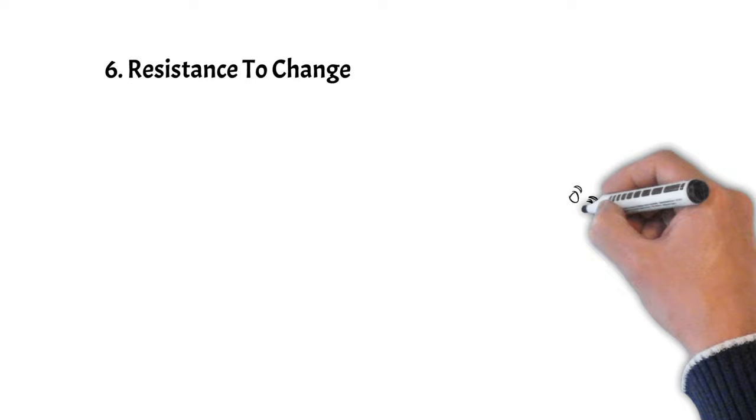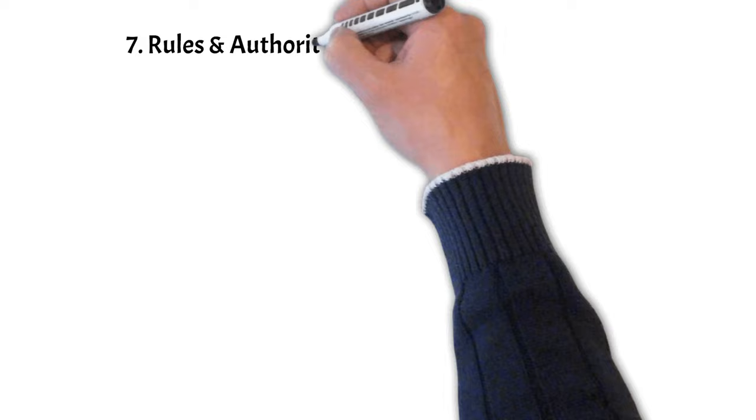Number 6: Resistance to Change. They often value stability and may be resistant to change, which can be challenging for people who thrive in dynamic environments.